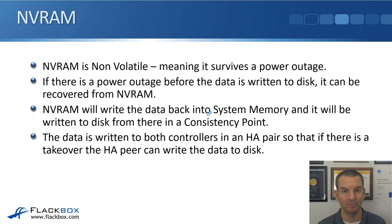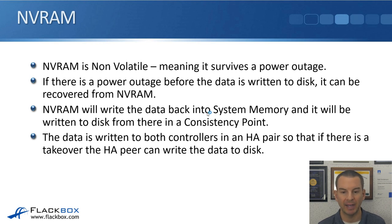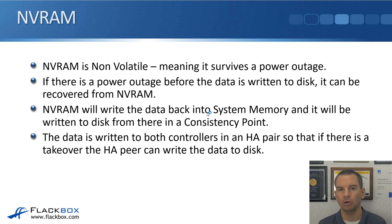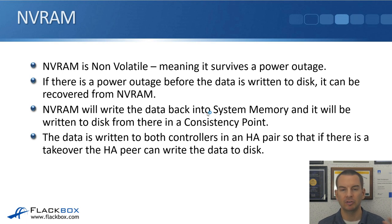NVRAM, unlike DRAM which is volatile and lost during a power outage, is non-volatile — that's what the NV stands for — meaning it survives a power outage. So if there's a power outage before data is written to disk, we've still got it in NVRAM and can recover it. NVRAM writes the data back into system memory, and it's then written to disk in a consistency point. We do not write to disk directly from NVRAM — it goes from NVRAM back into system memory, and then from system memory down to the disks in a normal CP.